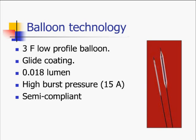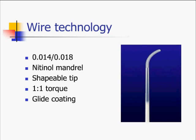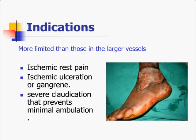Wire technology also improved. We started getting better quality 0.014 and 0.018 wires. The mandrel became nitinol, allowing better torque; the tips could be reshaped, and we had wires with a one-to-one torque. They all came with glide coating, allowing them to be navigated better.